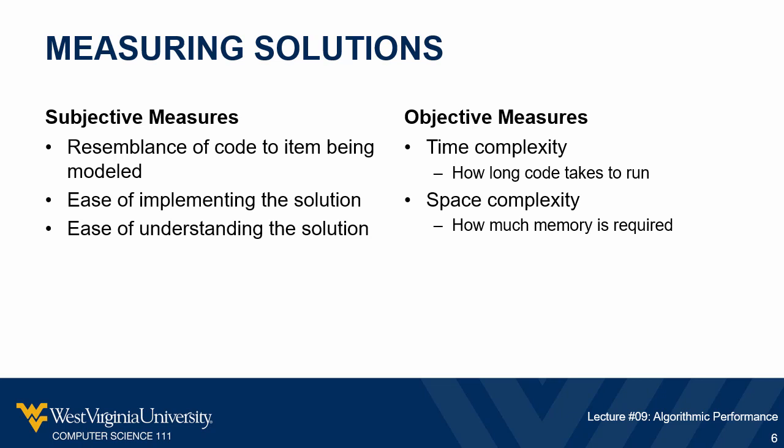On the objective measure side, the first thing we tend to look at is time complexity — basically a way of measuring how much work the processor is going to have to do as it executes the code. This serves as a rough proxy for the amount of time the code will take to run: more work means longer to run. We also have space complexity, which measures approximately how much memory the program is going to require to execute.